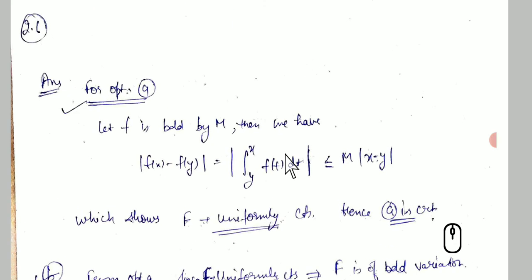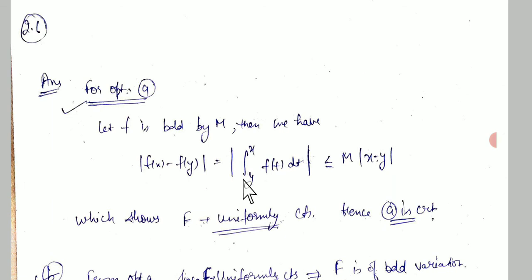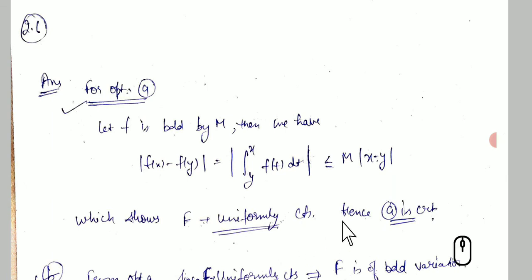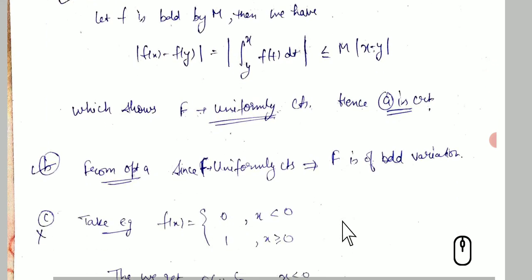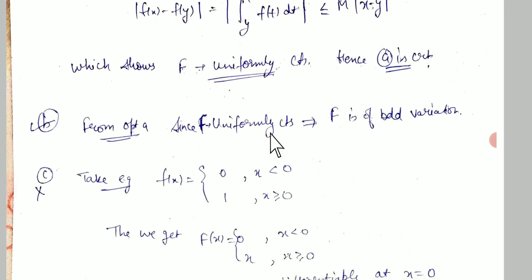Question 2.6: if f is bounded by M, then |f(x) − f(y)| = |∫_y^x f'(t) dt| ≤ M|x − y|, which directly satisfies the definition of uniform continuity, so f is uniformly continuous. For option B: if f' is uniformly continuous, then f is of bounded variation — this option is also true.